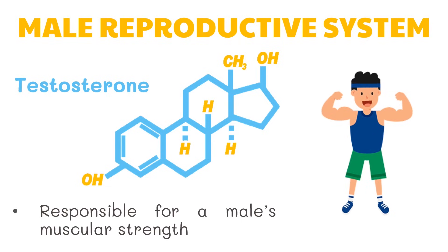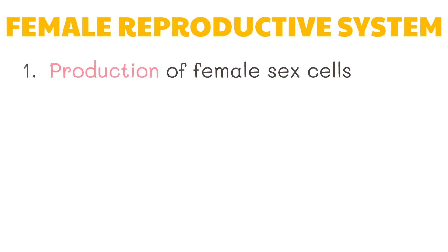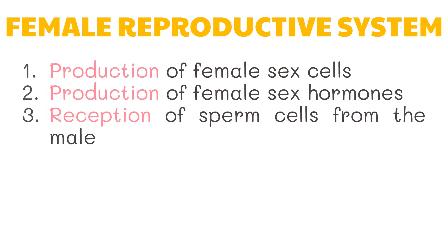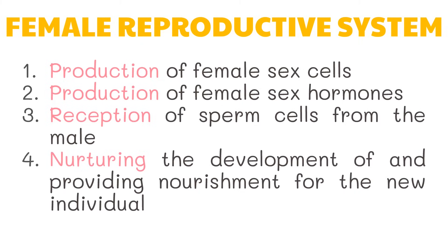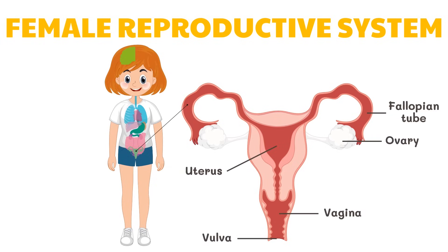That's all for the male reproductive system. Let's proceed to the female reproductive system. The female reproductive system has the following functions: production of female sex cells, production of female sex hormones, reception of sperm cells from the male, and nurturing the development of and providing nourishment for the new individual. It consists of a pair of gonads or the ovaries, fallopian tubes or oviducts, the uterus, the vagina, and the external genitalia or the vulva.